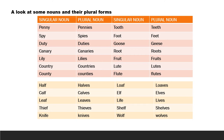Now, let us glance at some nouns and their plural forms. Penny — pennies, spy — spies, duty — duties, canary — canaries, lily — lilies, country — countries, county — counties, tooth — teeth, foot — feet, goose — geese, root — roots, fruit — fruits, lute — lutes, flute — flutes, half — halves, calf — calves, leaf — leaves, thief — thieves, knife — knives, loaf — loaves, elf — elves, life — lives, shelf — shelves, wolf — wolves.